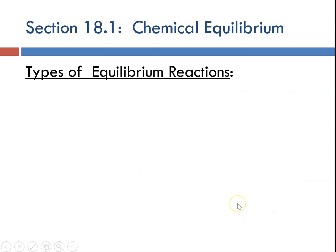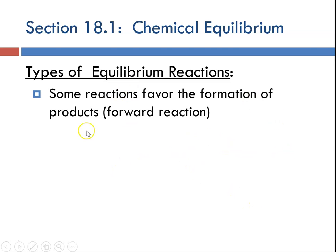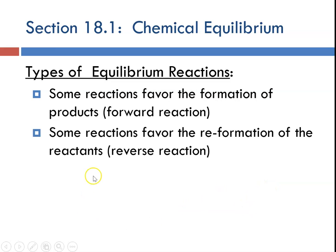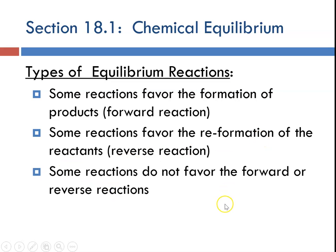The types of reactions that can become equilibrium reactions are ones that sometimes favor the formation of the products, which is the forward reaction, but it's reversible. Sometimes reversible reactions favor the reformation of the reactants, and sometimes these reversible reactions do not favor the forward or the reverse reactions. But all three of these can achieve equilibrium — that is, the point at which both the forward and the reverse reaction are occurring at the same rate. So it looks like nothing's changing.